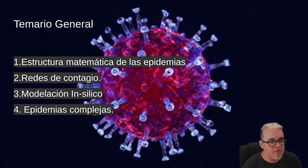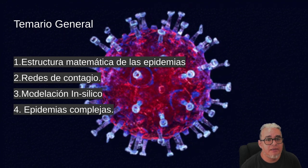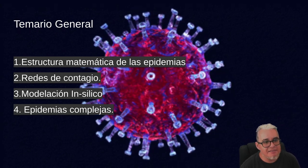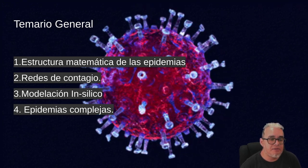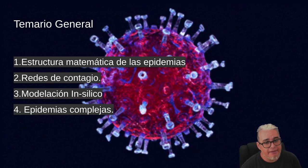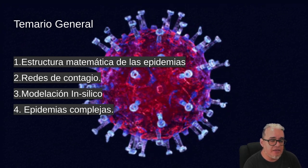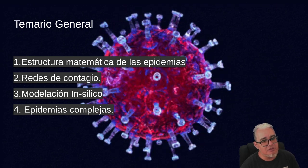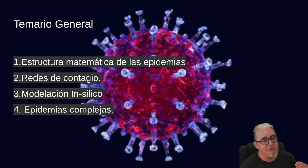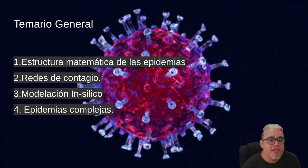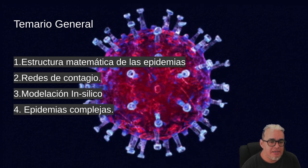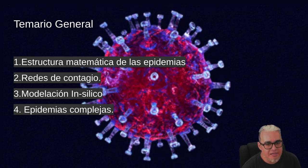Básicamente estamos hablando de cuatro módulos. El primero lo llamamos estructura matemática de las epidemias, que son modelos compartimentales y una introducción hacia modelos no deterministas. Luego hablaremos de redes de contagio, de métodos computacionales o modelación in silico, y terminaremos hablando sobre epidemias o enfermedades complejas, es decir, aquellas enfermedades donde tenemos multicausalidad y la ocurrencia de fenómenos en distintos niveles de organización de la materia.